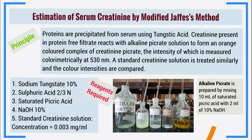Before creatinine in the unknown sample reacts with alkaline picrate, proteins must be precipitated from serum using tungstic acid. Why? Because if proteins are present, they will react with alkaline picrate and get precipitated, making the solution turbid. Since we intend to measure optical density due to the orange color of creatinine picrate, turbidity caused by protein precipitation would contribute to the absorbance, giving falsely elevated creatinine levels. Therefore, proteins must be removed from the serum sample before creatinine reacts with alkaline picrate solution.